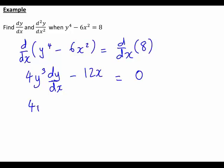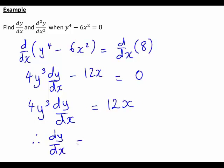We now rearrange this to make dy dx the subject, giving us 4y cubed times dy dx equals 12x. Therefore, dy dx is equal to 12x divided by 4y cubed, which will simplify down a bit further, since 4 is a common factor there, to dy dx being 3x divided by y cubed.